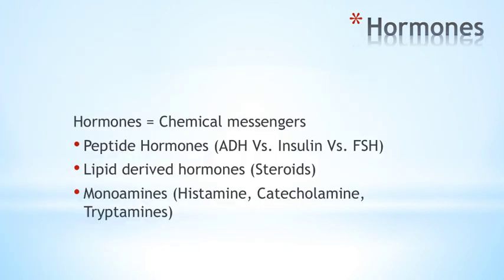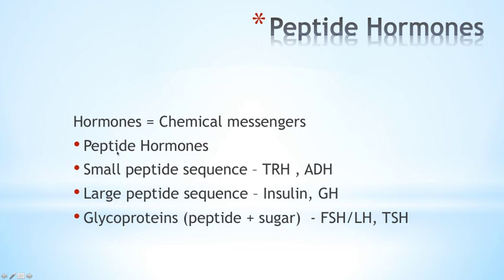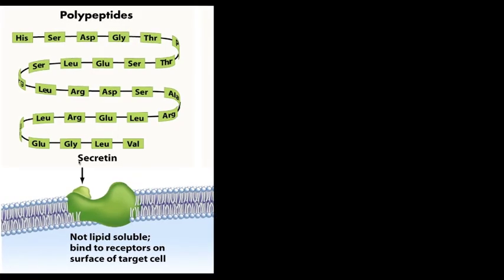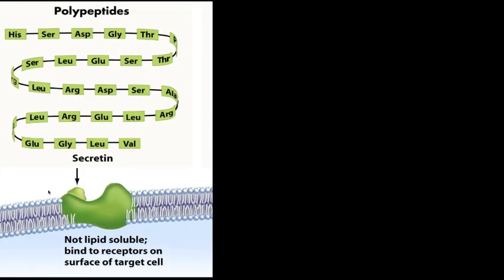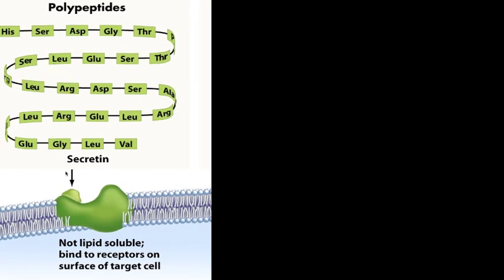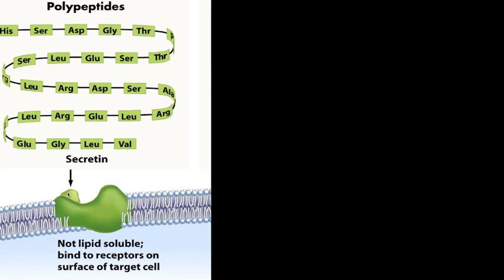What are the hormones — the chemical messengers used by the endocrine system? They could be peptide hormones, lipid-derived hormones, or monoamines. Peptide hormones, as the name suggests, are made of amino acids. These can be further subdivided into small peptide sequences such as TRH or ADH, or larger peptide sequences forming a protein such as insulin or growth hormone, or glycoproteins such as FSH, LH, or TSH. Their mode of action — as in the case of secretin, a polypeptide — is that they cannot diffuse through the lipid bilayer, so they must bind to a receptor on the cell surface.